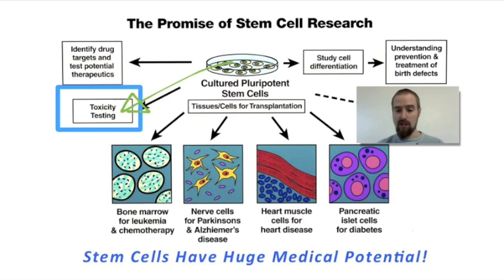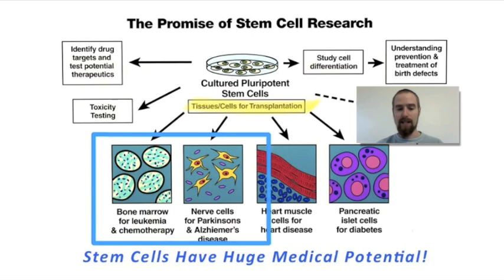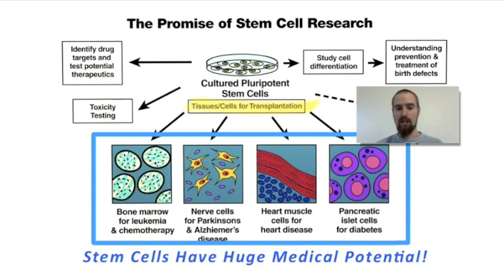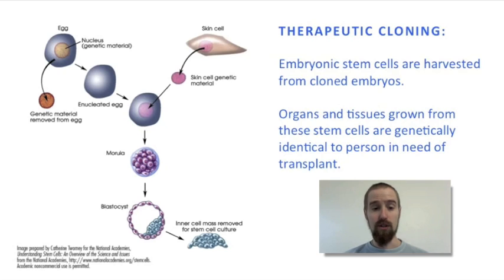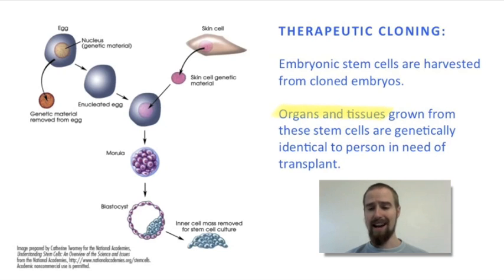By studying stem cells and cell differentiation, we may one day learn how to prevent and correct birth defects and may also be able to grow brand new healthy organs for transplant into people with failing or diseased organs. Growing a new organ for a person is a practice called therapeutic cloning. Cloning in general is a controversial topic, but it is important to remember that unlike reproductive cloning — in which whole organisms may be cloned or copied — therapeutic cloning involves cloning only part of an organism, something like a kidney or a liver or a heart, and not the whole organism.